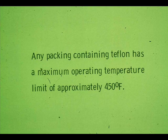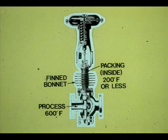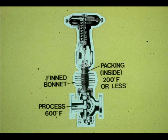Packing materials vary according to services. Teflon impregnated asbestos or graphite is widely used. This type of packing is self-lubricating. Any packing that contains Teflon has a maximum operating temperature limit of approximately 450 degrees Fahrenheit. This is a packing temperature limit, not the process fluid temperature limit. A fin or extension bonnet can be used to cool the packing to below 450 degrees Fahrenheit, even if the process is much hotter.